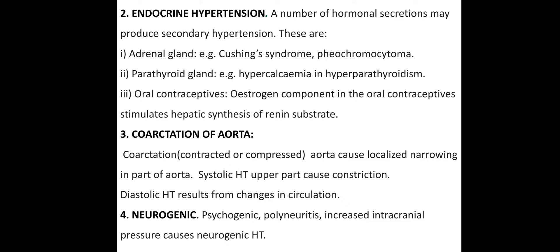Endocrine hypertension involves the endocrine system, which deals with hormone secretion. Hormonal imbalance from overactive glands causes endocrine hypertension. Examples include adrenal gland disorders such as Cushing's syndrome and phaeochromocytoma. Hyperparathyroidism causing hypercalcemia is also a cause of endocrine hypertension. Estrogen components are also implicated.